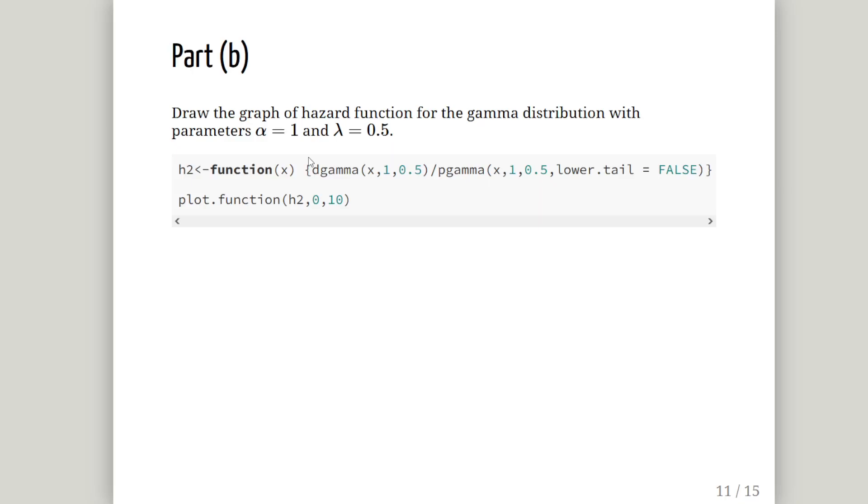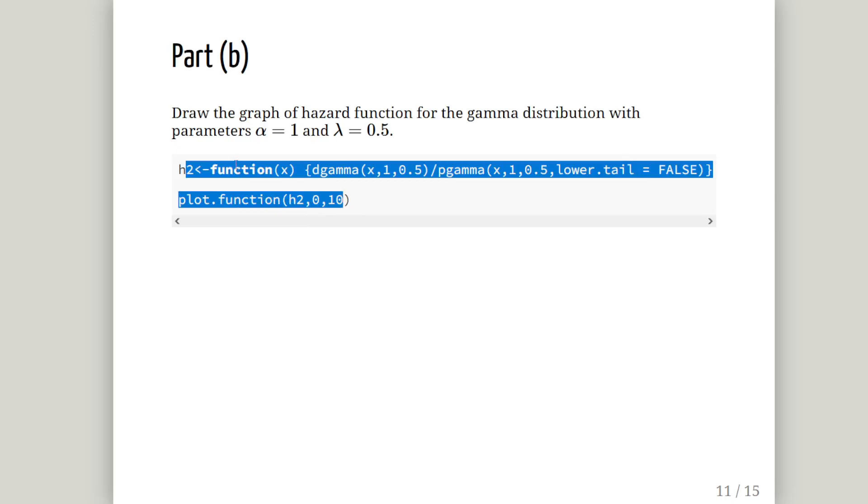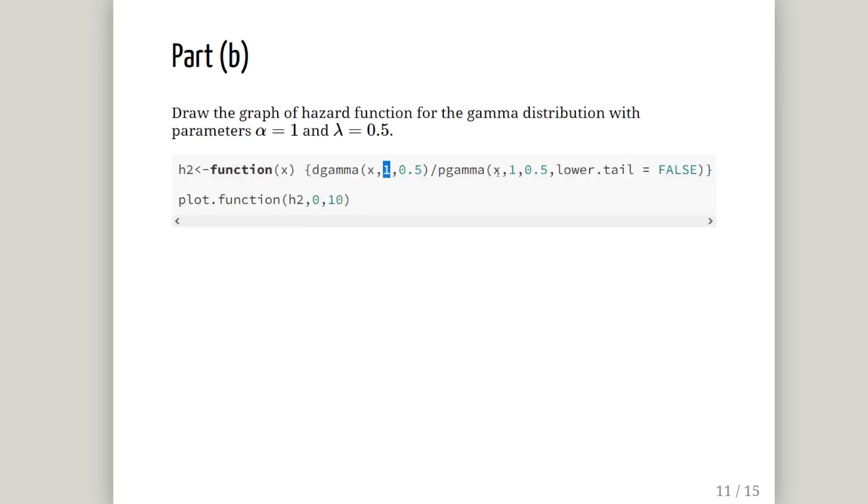What we're going to do is something very similar. This time we're letting alpha equal to 1. Previously it was 0.75, now alpha is equal to 1. Apart from that we're doing something almost identical to what we've just done previously. Here alpha is equal to 1, but apart from that we have the density function as before and the survival function as before. We set that up as a function using this command here, we're going to call it h2.